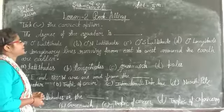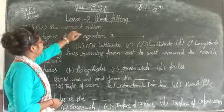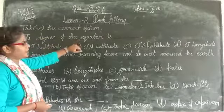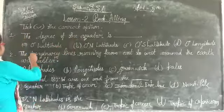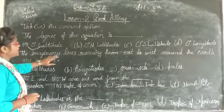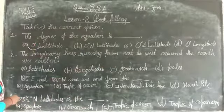The first class is subject necessity. What is latitude? The imaginary line running from east to west around the earth is called latitude.